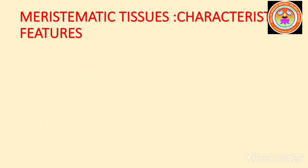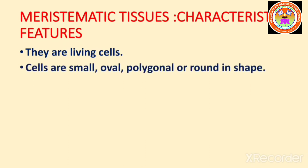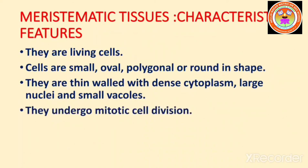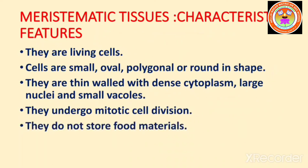Let us see the characteristic features of meristematic tissue. They are living cells. Cells are small, oval, polygonal, or round in shape. They are thin-walled with dense cytoplasm, large nuclei, and small vacuoles. They undergo mitotic cell division. They do not store food materials.